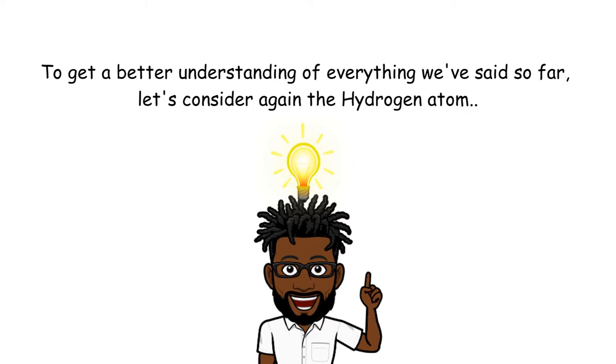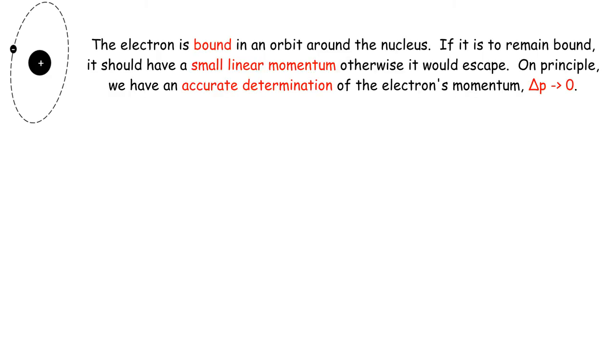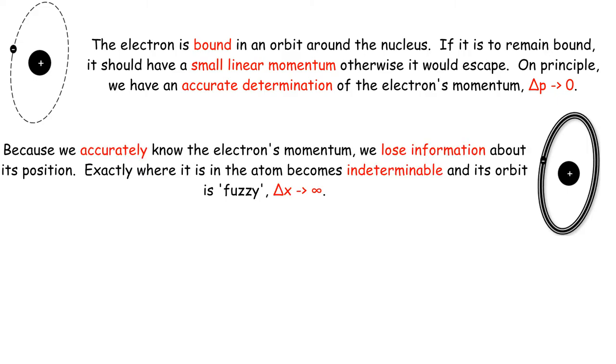So to get a better understanding of this, let's consider, again, the hydrogen atom. Now normally we think of orbitals, an electron travelling around the atom, the nucleus in an orbital. It's bound in the orbit, so therefore, it should have linear momentum, a small linear momentum, otherwise it would escape. So delta-p tends to zero.